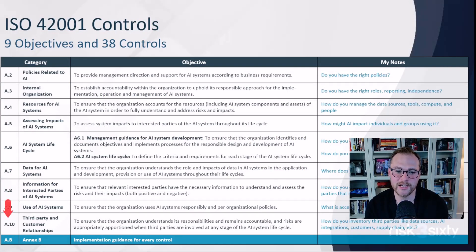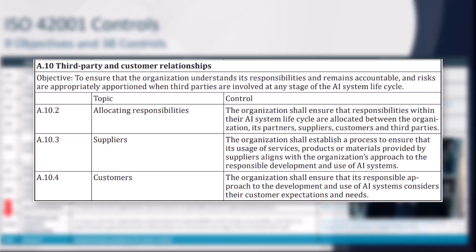A10 is third-party and customer relationships. When you consider the whole supply chain of AI risk — the vendors you use to support your products, the integrations you rely on, and other key third parties like customers, implementers, integrators, and trainers — what is your risk management approach for inventorying and managing that risk?